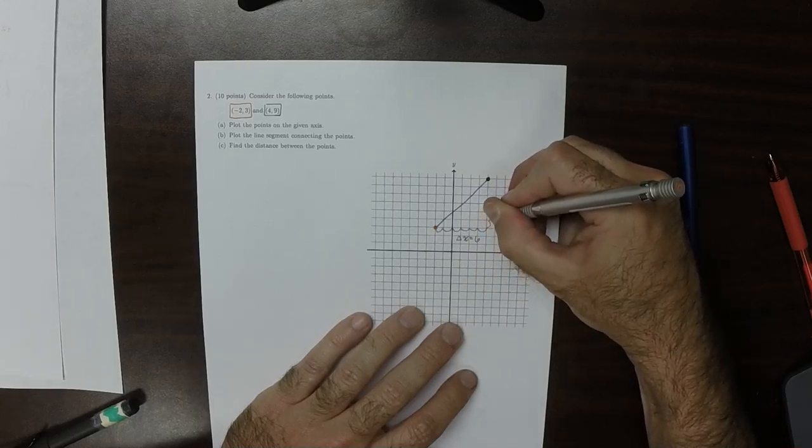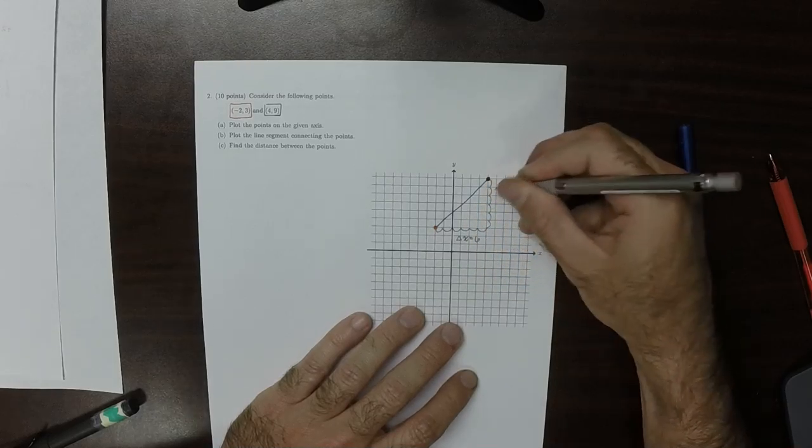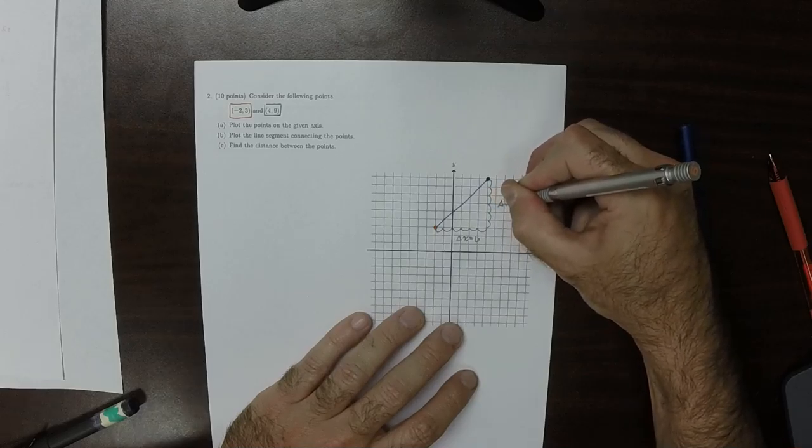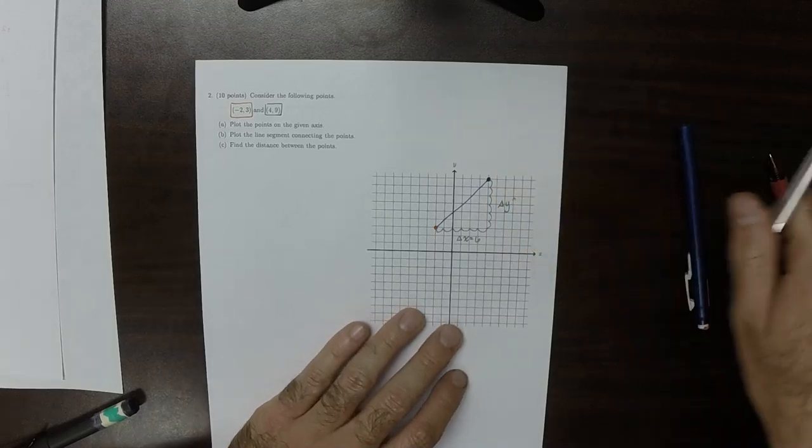So the change in x is 6. And then 1, 2, 3, 4, 5, 6. The change in y is 6.